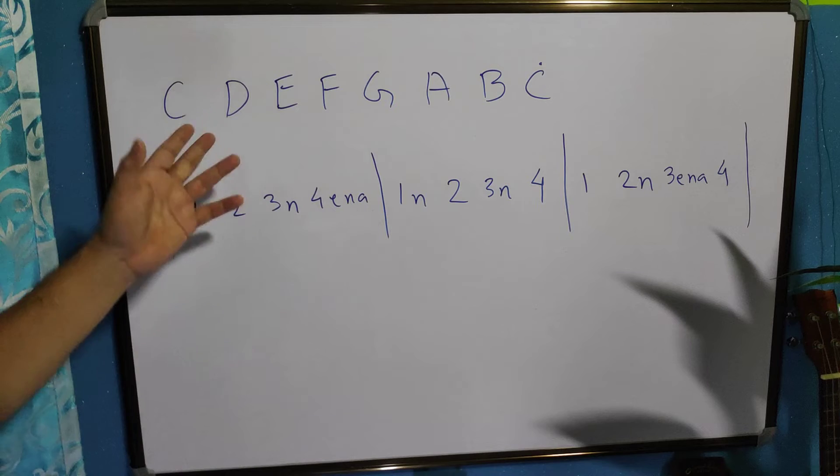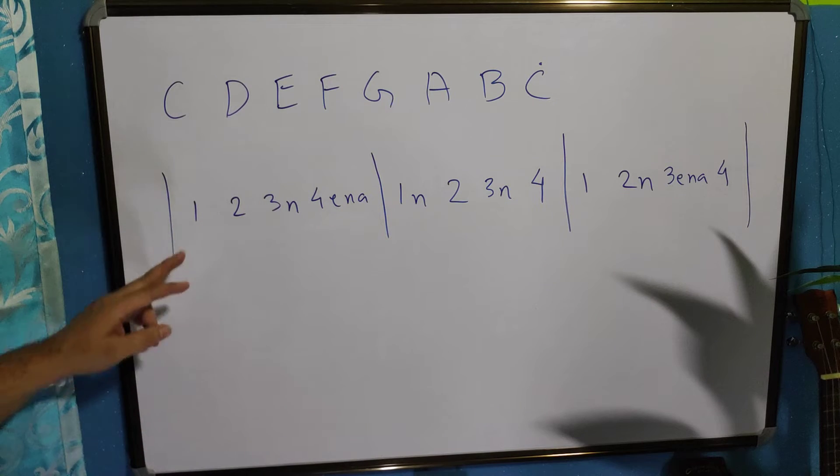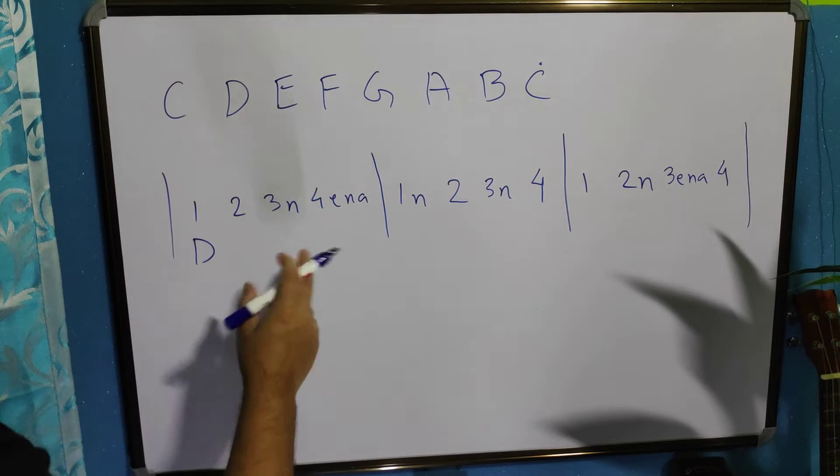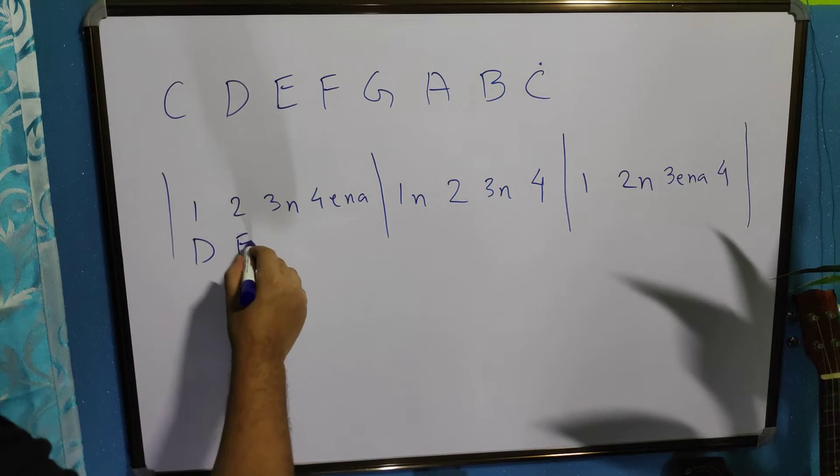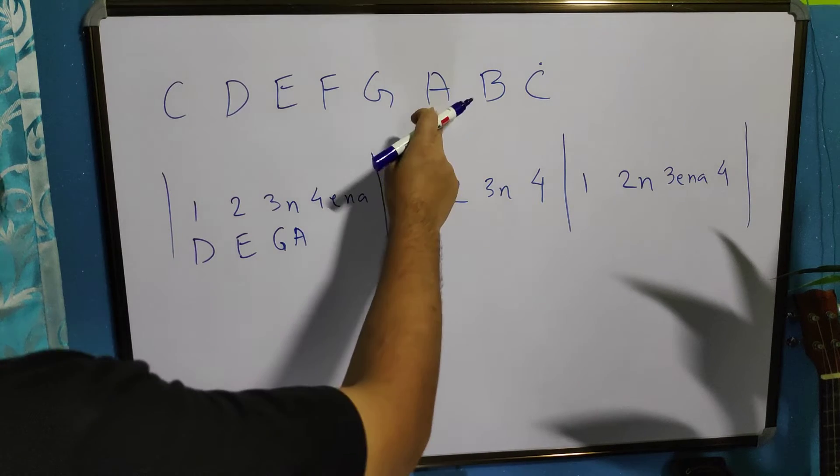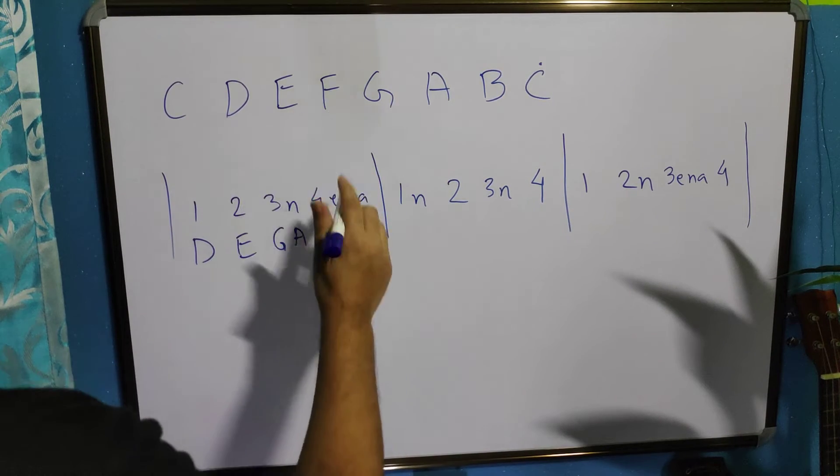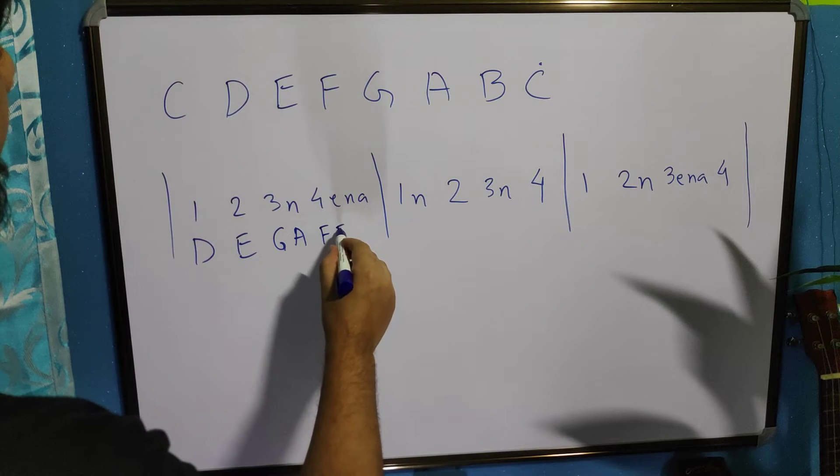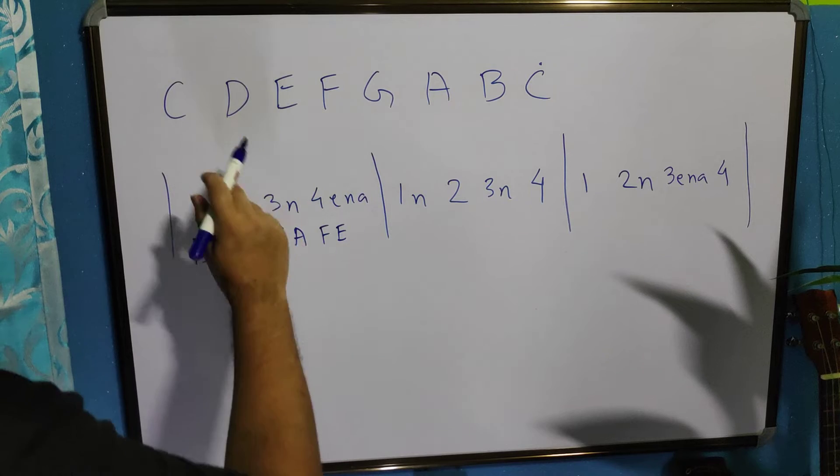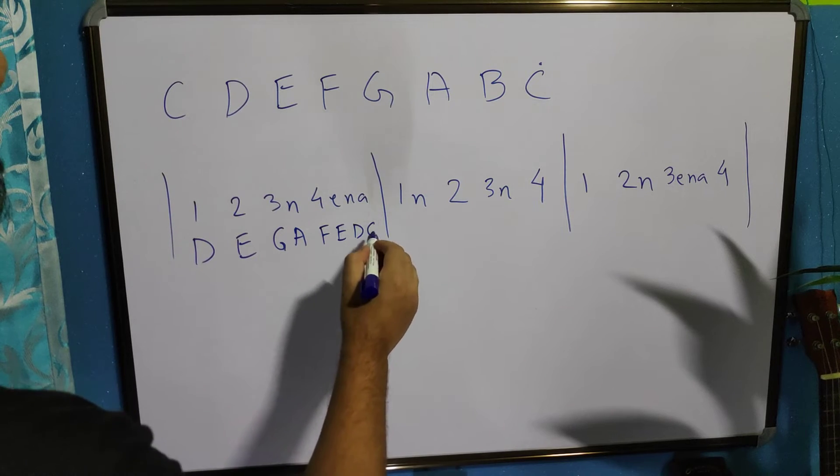And now you place some notes from C major scale. You can take any scale, but just for simplicity, I'm writing the C major scale. Now, in the one, you can start any note. For example, let's start from D, D, E. And then we move to G, A. G, A. Then F, E. These semi quavers. F, E, D, C.